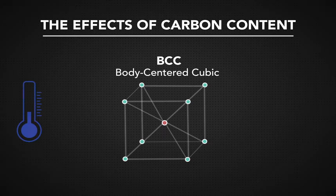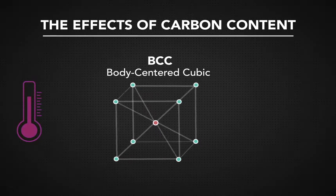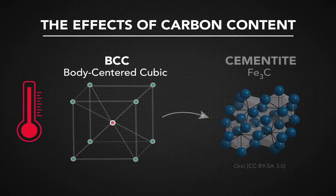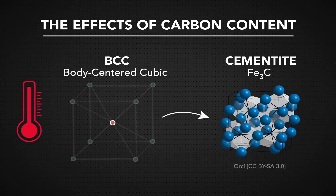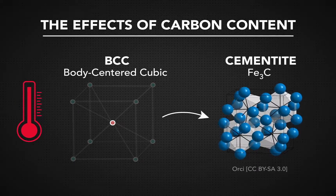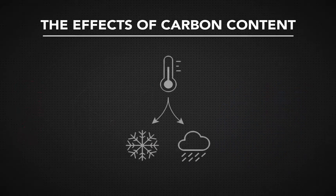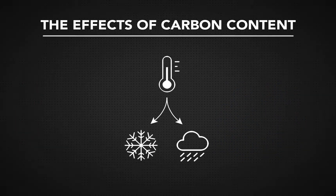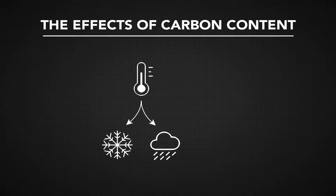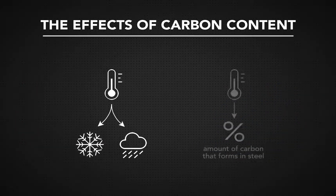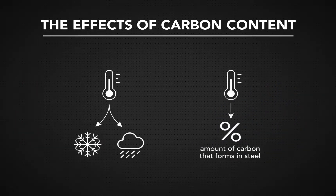And so, when the temperature increases, the carbon that was stored in the crystal structure becomes a precipitation of cementite. The process is called precipitation because, just like the way temperature dictates whether it snows or rains, temperature controls the amount of carbon that forms in steel.